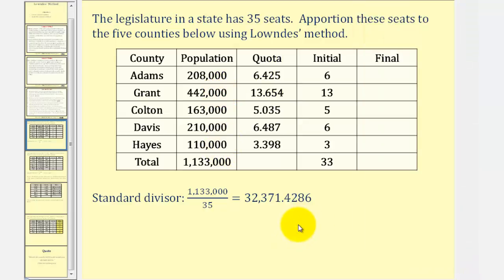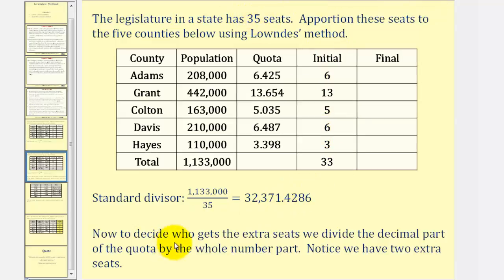Now to find the initial allocation, often called the lower quota, we remove the decimal part of each quota, which gives us 6, 13, 5, 6, and 3. Notice how the initial allocation gives a total of 33 seats, and we have a total of 35 to apportion. So now, to decide who gets the extra seats, we divide the decimal part of the quota by the whole number part. For Adams, we take .425 and divide by 6. For Grant, we take .654 and divide by 13, and so on.